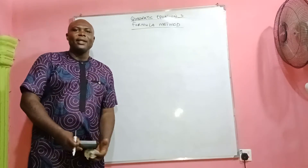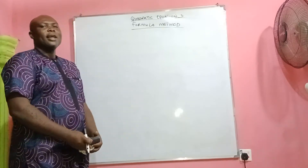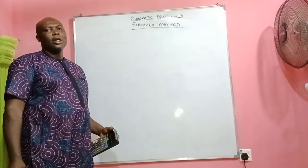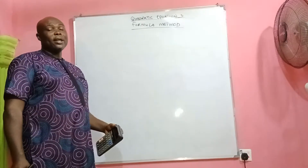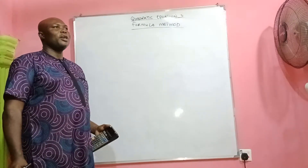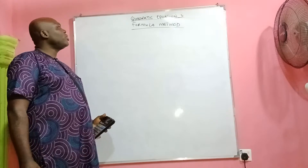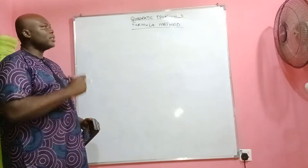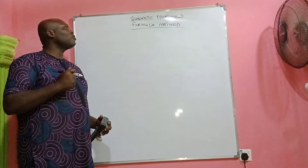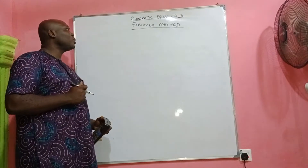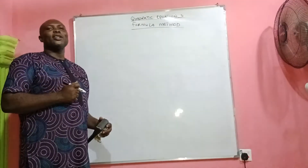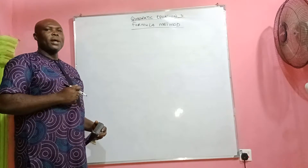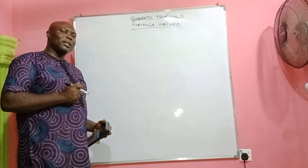Welcome to Simplified Maths. In our class today we are taking quadratic equations part 3, which is the formula method. In part 1 we solved quadratic equations using the factorization method, and in part 2 we solved them using completing the square. Now we are taking the formula method, which is the almighty formula.